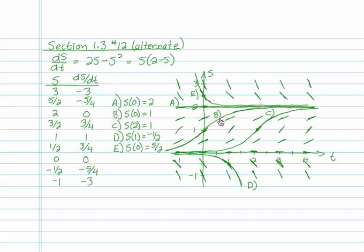Then I know as I come up here, the slope is 3 fourths according to my chart when s is 3 halves. So I'm leveling off, approaching that equilibrium solution at s equals 2. Likewise, when I go backwards in time, I'm also leveling off to another equilibrium solution, equilibrium solution s equals 0.